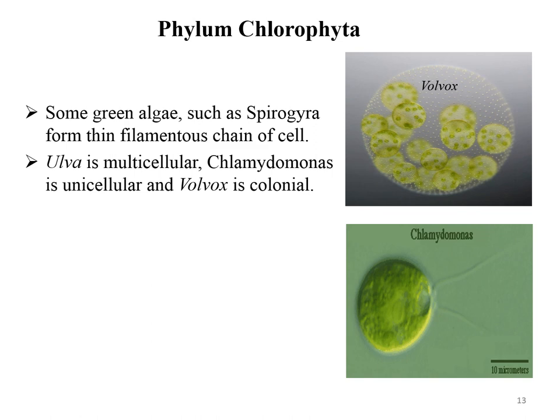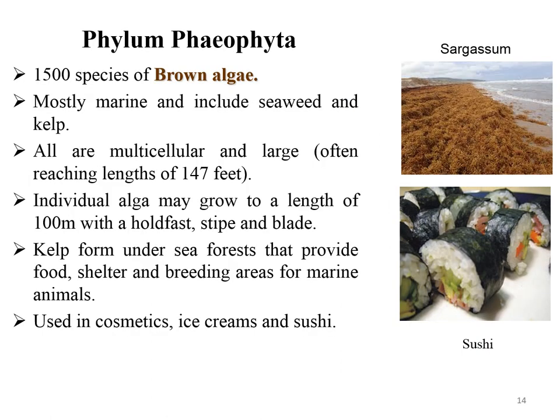Phylum Phaeophyta, also called brown algae, has about 1,500 species, mostly marine, and includes seaweeds and kelp. All are multicellular, and large individual algae may grow to a length of 100 meters, with a holdfast, stipe, and blade. Kelp forms underwater sea forests that provide food, shelter, and rearing areas for marine animals. Brown algae are used in cosmetics, ice cream, and sushi.